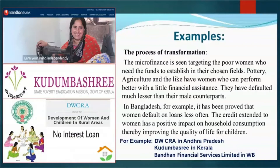Some examples are DWCRA, Kudumbasree in Kerala, and Bandhan Financial Service Limited in West Bengal. Microfinance targets poor women who need funds to establish themselves in their chosen fields — for example, pottery, agriculture. In Bangladesh, it has been proved that women default on loans less often than their male counterparts.